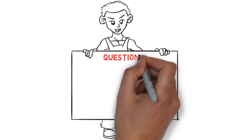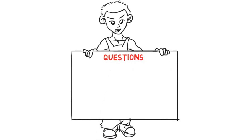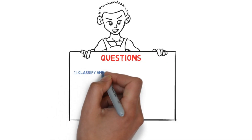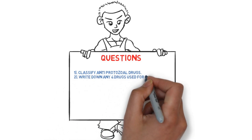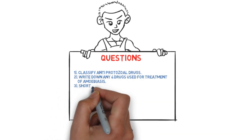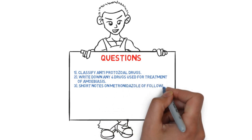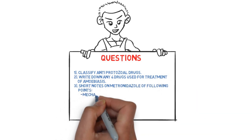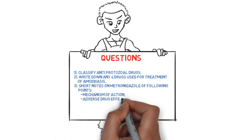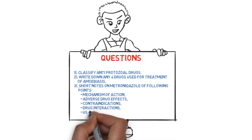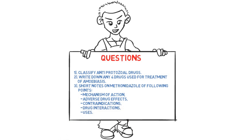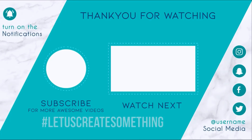Now let's review the exam questions for this topic. Number one: classify anti-protozoal drugs. Number two: write down any four drugs used for treatment of amoebiasis. Number three: write short notes on metronidazole covering the following points — mechanism of action, adverse drug reactions, contraindications, drug interactions, and uses.